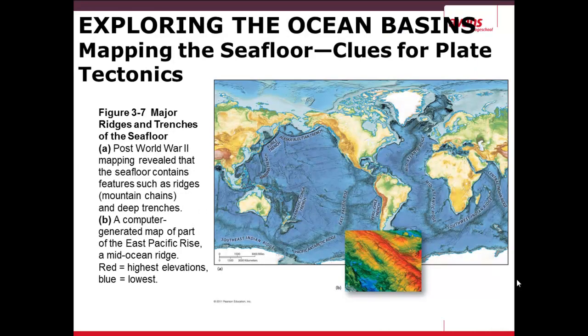The ocean floor was mapped, and as you see in this figure, after World War II, partly because of the large-scale production of submarines, they began to map the bottom of the ocean floor. Notice that these oceans had ridges, which are underwater mountains, and very deep trenches. A computer-generated map of the East Pacific Ridge shown here demonstrates the difference in elevations, the red being the highest elevation and the blue being the lowest.